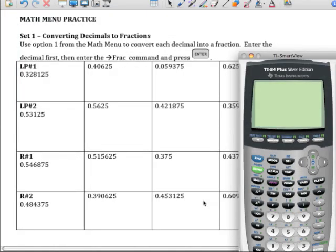This video clip covers lesson practice number one from set one from this section of the notes. In this section we're converting decimals to fractions, so let's read the instructions. Use option one from the math menu to convert each decimal into a fraction. Enter the decimal first, then enter the arrow over fraction command and press enter.